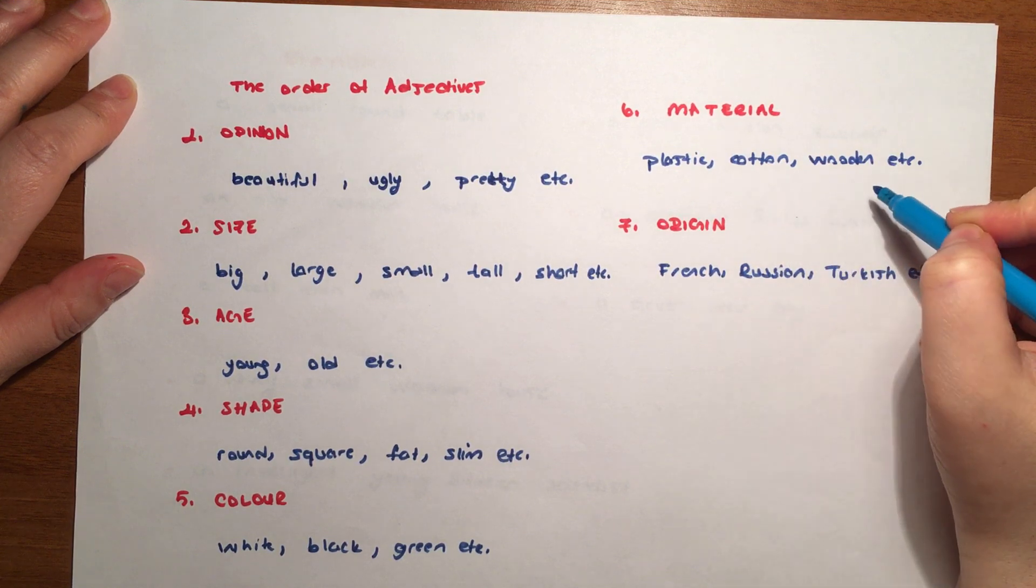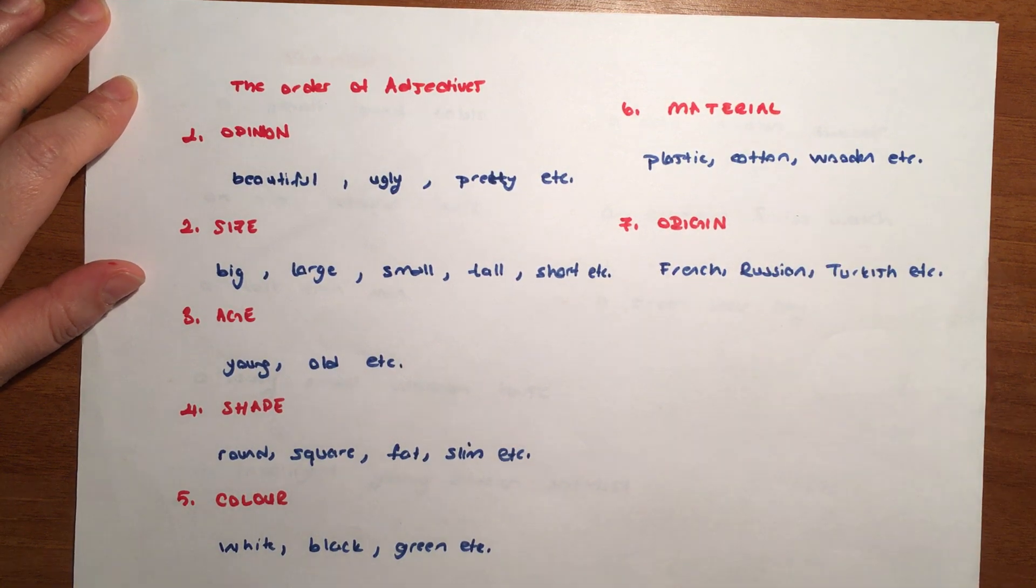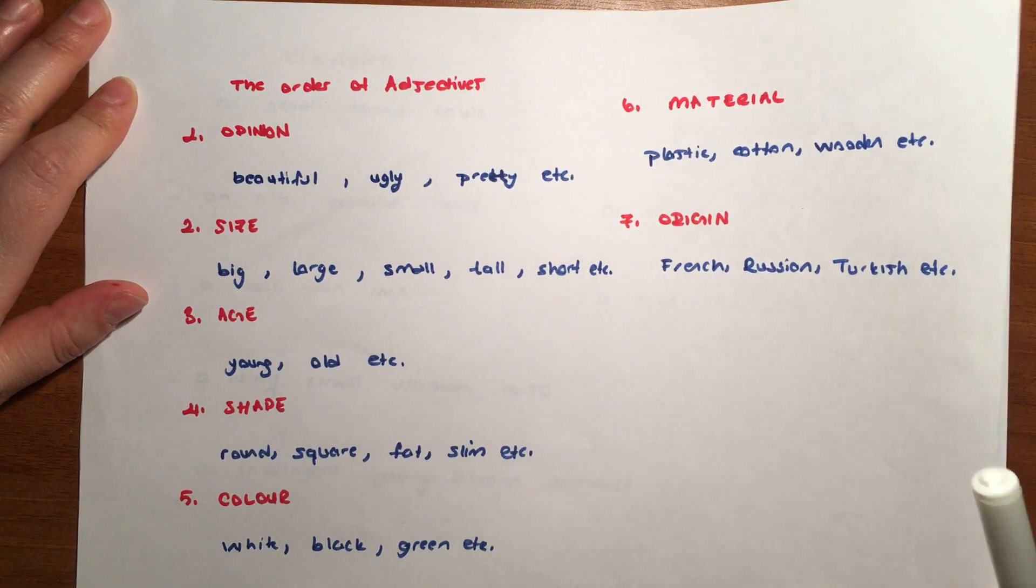Materials - plastic, cotton, wooden. We use these when talking about what material something is made of. Origin, as we said - French, Russian, Turkish, we can say. Turkish, Russian, French - we can use these.